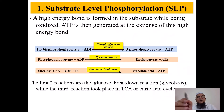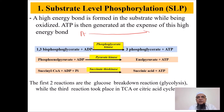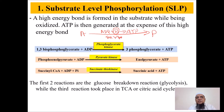In substrate level phosphorylation, energy is generated at the site of the reaction. Substrate A is converted into product B with the help of an enzyme. This reaction releases enough energy that it attaches inorganic phosphate to ADP to form ATP. The phosphate coming directly from the substrate — or from inorganic phosphate if the reaction is strong enough — attaches to ADP to make ATP. This type of phosphorylation is called substrate level phosphorylation.